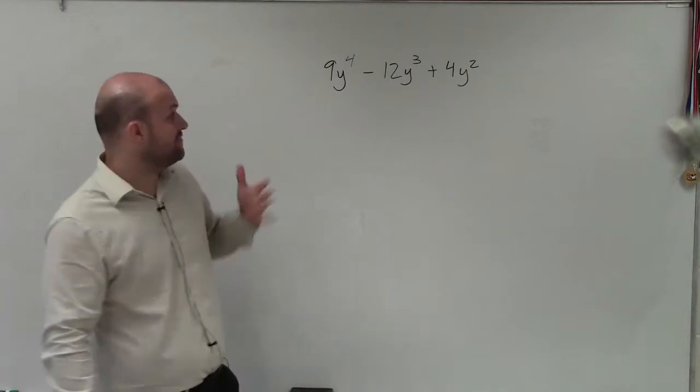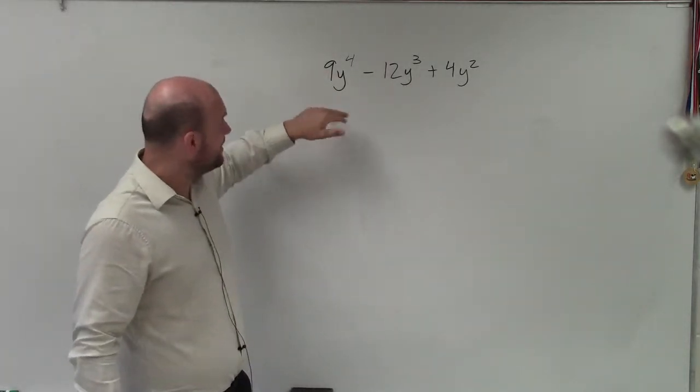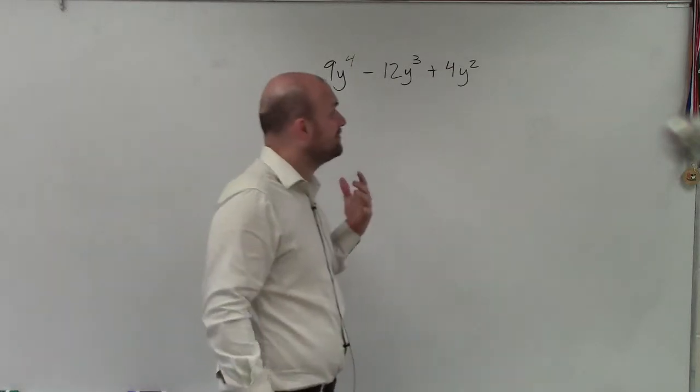Basically, I see this one does not look very fun, right? We have nothing I can factor out of all three terms. And then I have y to the fourth, y cubed, and y squared.